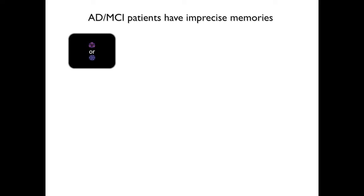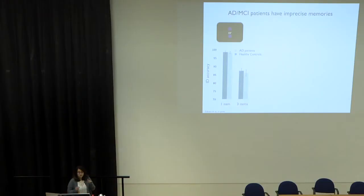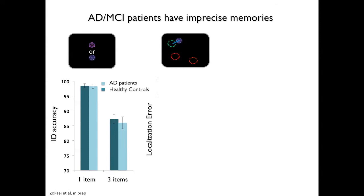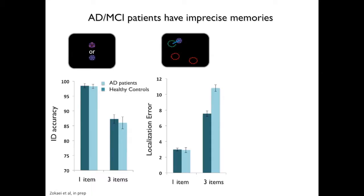This lets us look at how accurately they remember the object's shape and identity, and also how precise their location memory is — how precise their memory for that location is. We used this task and tested a group of patients with Alzheimer's disease and mild cognitive impairment, and compared their performance with a group of healthy age-matched participants. Looking first at object identification, patients are performing as well as healthy controls.